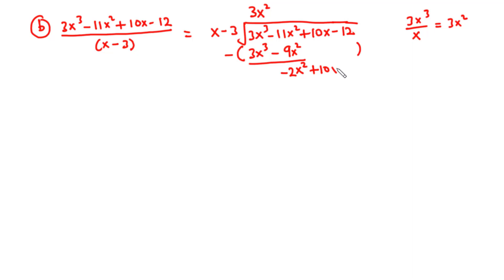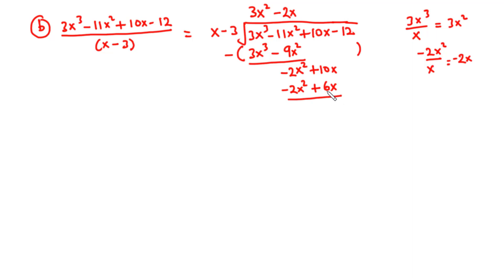We drop 10x downwards. Now negative 2x squared divided by x is negative 2x. So we write negative 2x. Negative 2x times x is negative 2x squared, and negative 2x times negative 3 is 6x. Subtracting: negative 2x squared minus negative 2x squared is 0, and 10x minus 6x is 4x. We bring down negative 12. So 4x divided by x is 4.